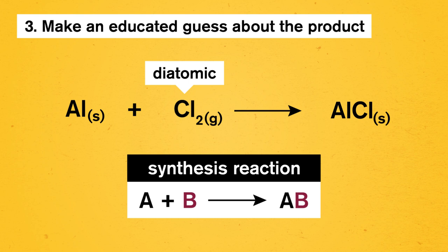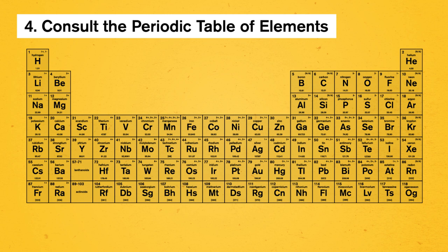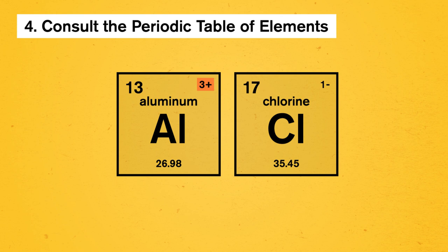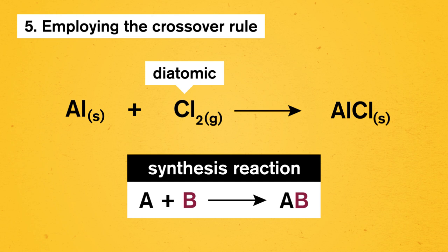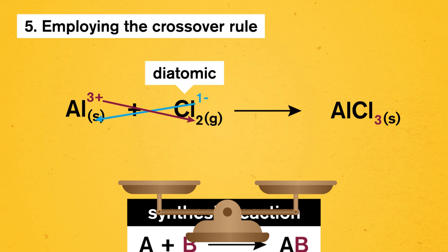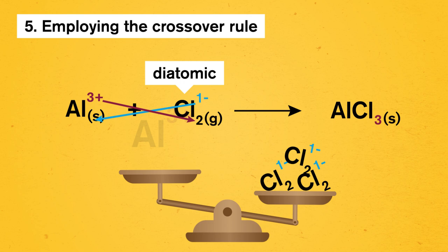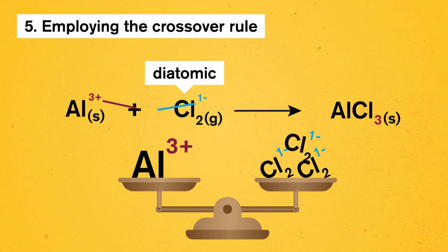But something still doesn't feel right. We need to go to step 4, consulting the periodic table of the elements. If we find aluminum on the table, we see that it has a charge of plus 3. Similarly, chlorine has a charge of minus 1. Now we can do step 5, employing the crossover rule. That's when the reactant's ion charges switch places and become subscripts in the product. Another way of saying this is that we need three chloride anions, or negative ions, to balance out one aluminum cation, or positive ion. And the same has to be true for the product side.